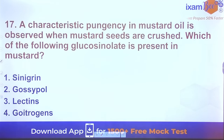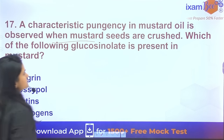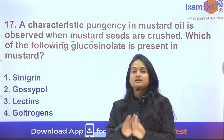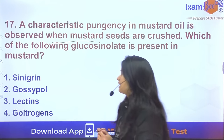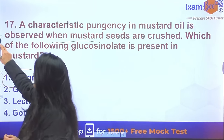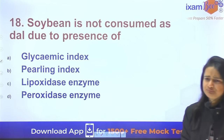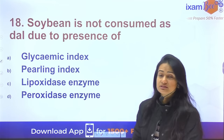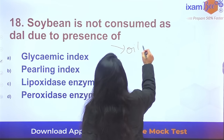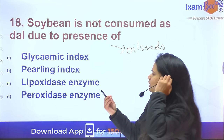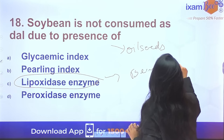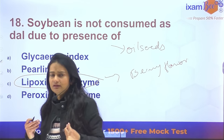Question 17: Characteristic pungency in mustard oil — when mustard seeds are crushed, a compound is released that causes pungency. That compound is sinigrin. Question 18: Soybean is not consumed as a dal but used as an oilseed crop because it contains the lipoxidase enzyme, which gives it a beany flavor that many people do not like.